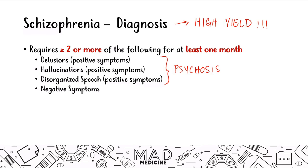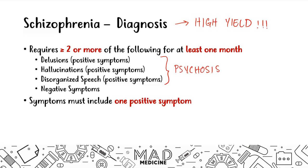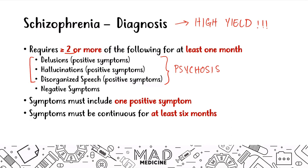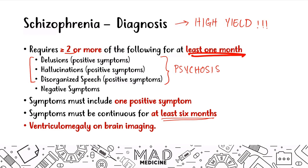You also have things called negative symptoms, which we'll discuss in a bit. The two or more symptoms must include at least one of the positive symptoms — delusions, hallucinations, or disorganized speech — and the other can be a positive or negative symptom. Finally, symptoms must be continuous for at least six months. Patients usually also have ventriculomegaly of the brain, which is seen on imaging and is pretty high yield.